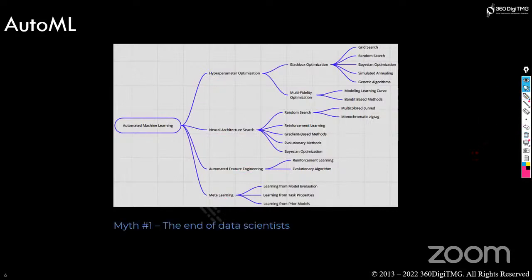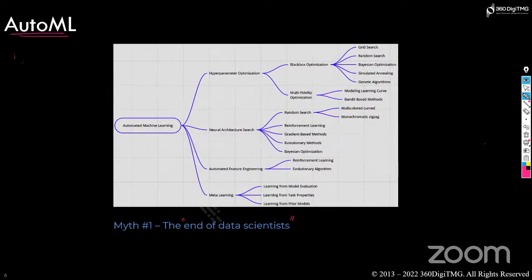The first question that arises is: does Automated Machine Learning mean the end of the role of data scientists? The answer is no. Automated ML can only do so much. First, you need to understand and document the business problem — AutoML cannot identify or solve business problems automatically, so human intervention is still needed.